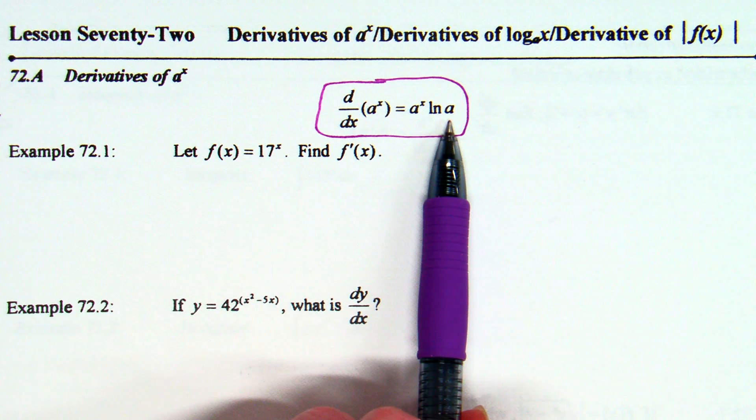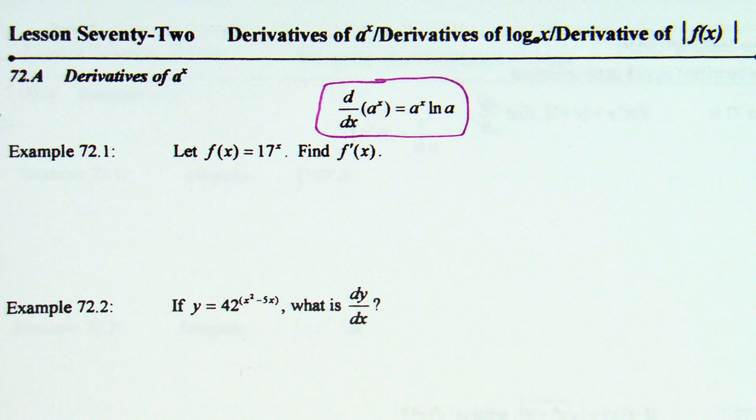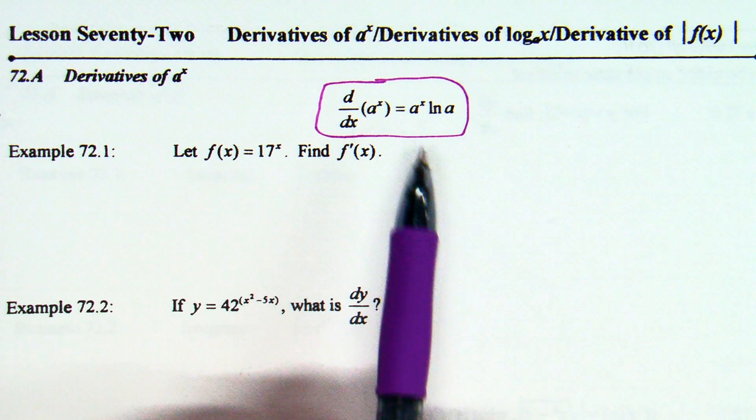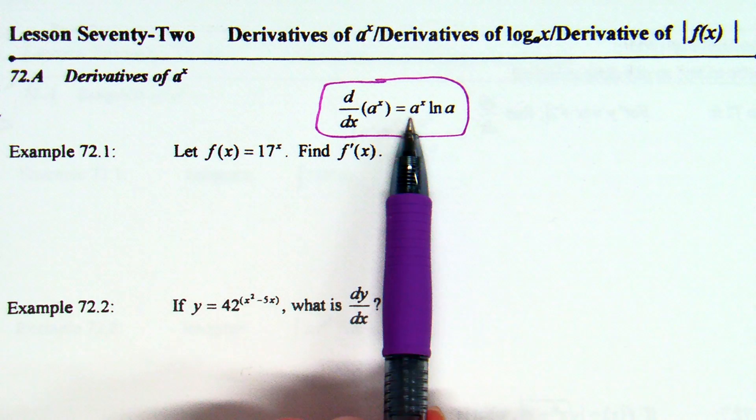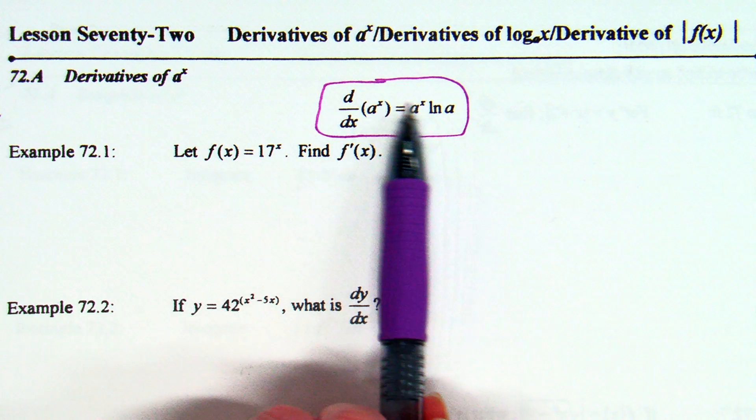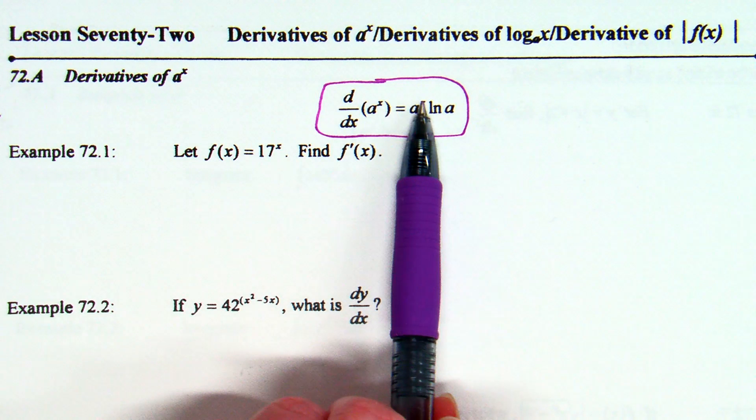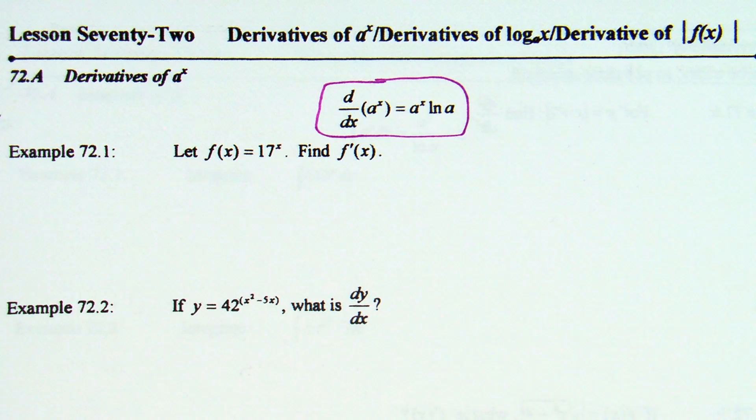So, of course you have to watch out for the chain rule in all of these like everything else. But, the derivative of a to the x is a to the x times the natural log of a. If your power of x is more than just an x, that's when our chain rule will come into play. Let's try it. Let f of x equals 17 to the x. Find f prime of x.